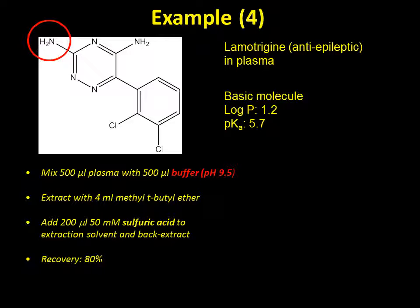The final LLE example is lamotrigine, an anti-epileptic to be bioanalyzed in plasma. It is a basic molecule with primary amino groups, fairly hydrophilic with a log P of 1.2 and a pKa of 5.7. First, 500 µL plasma is extracted with 500 µL of buffer at pH 9.5 to deprotonate the primary amines, then extracted into 4 mL of methyl tert-butyl ether. It is then back-extracted into water: by adding sulfuric acid, the pH goes to the acidic side, the amines are protonated, the drug molecule becomes more hydrophilic and transfers back from the MTBE phase into the water phase. This additional step further enriches and purifies the drug. Overall recovery is 80%.